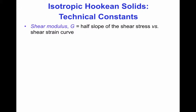There are a number of different technical constants that can be measured in elastic materials. The shear modulus happens to be the same as one of the Lamé constants, and it equals half of the slope of the shear stress versus shear strain in a shear experiment. For isotropic Hooke's law, when i is not equal to j, for the shear components, Tij equals 2 times mu times epsilon_ij. So plotting shear stress versus shear strain, the slope would be 2 mu, or 2G.